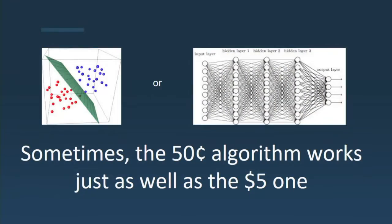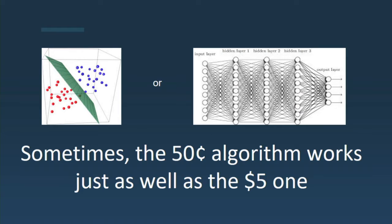The next lesson we have learned: sometimes the 50-cent algorithm works just as well as a $5 algorithm. We love deep learning — it's in our DNA, and Watson is built around deep learning. But my point is classic ML is not dead. On the left-hand side we have support vector machine, and on the right-hand side is a neural net. Sometimes a logistic regression might do the trick. Why? It's faster to train, and if you're using hyperparameters, it's easier to tune.